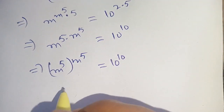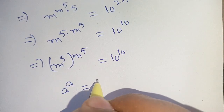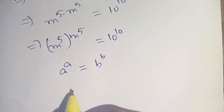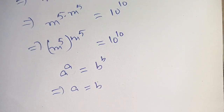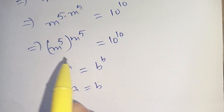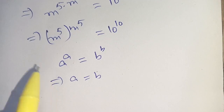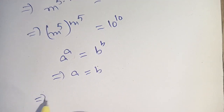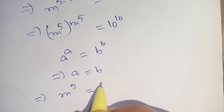Now it is in the form of a raised to the power a is equal to b raised to the power b. If this identity exists, it implies a is equal to b. Here we suppose a is equal to m raised to the power 5 and b is equal to 10. Now on comparing a is equal to b, we have m raised to the power 5 is equal to 10.